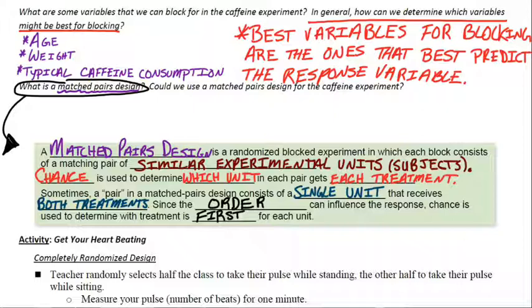The other way we use matched pairs, if you know people that are twins, they're really interesting for experiments because they're so similar. We can randomly assign a treatment to each one and see what the effect is. So matched pairs design, hence the word pairs in the name, is a special case of a randomized block experiment.